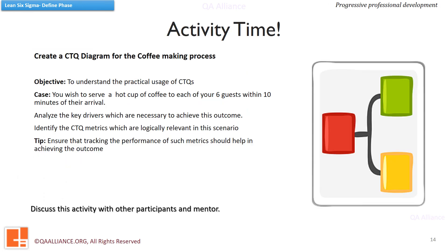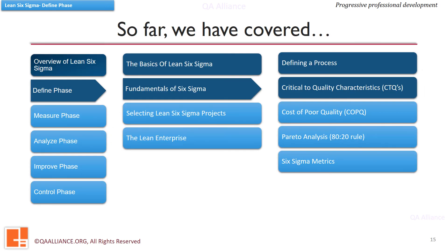As an exercise, create a CTQ tree diagram for the coffee making process. You wish to serve a hot cup of coffee to each of your six guests within 10 minutes of their arrival. Write down the exact need, identify a couple of drivers which will help you fulfill the need, and with each driver, map the critical to quality metrics. Now we move on to the next lesson.